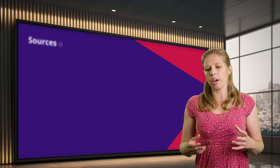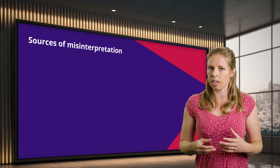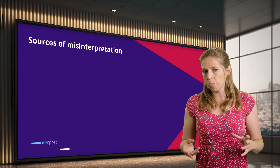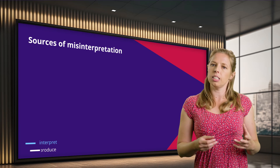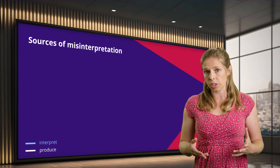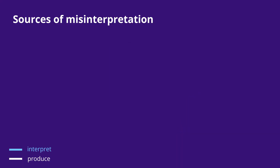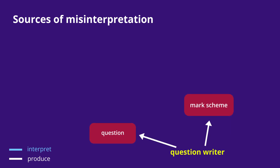What we have effectively is a process where a lot of people are communicating with one another in written form alone, without the ability to ask questions or qualify where things are unclear. At the start of the process we have the question writer. They have to write the question and the mark scheme as clearly as humanly possible so that the student has a good understanding of the task in the exam hall and markers know how to reward the response they see in front of them.